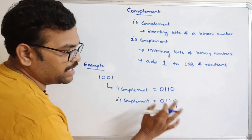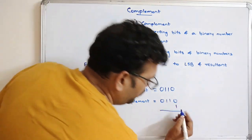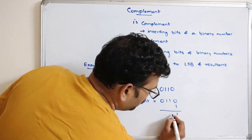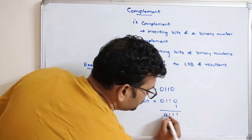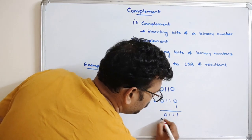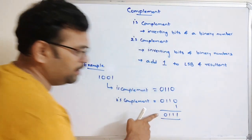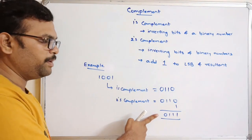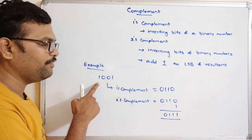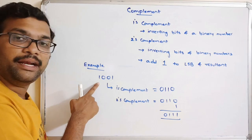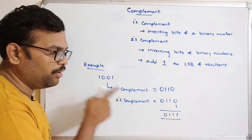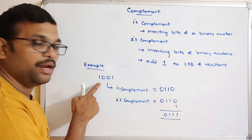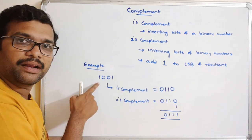So simply adding 1 to the LSB of 0110: the result is 0111. So 0111 is the 2's complement of the given binary number 1001.